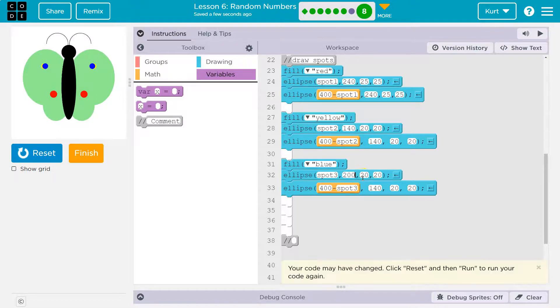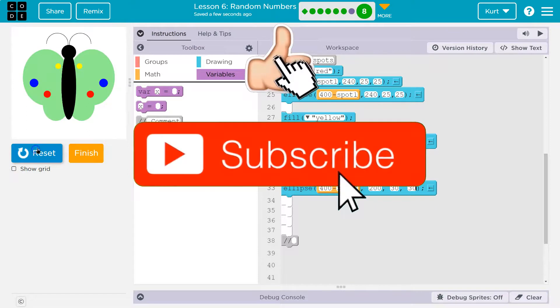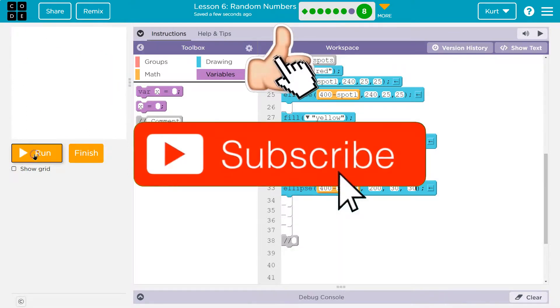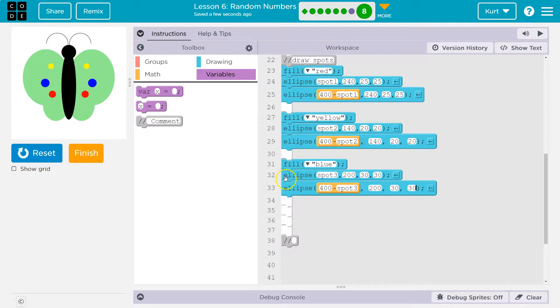So let's give some variability here. So I don't know, 200, 30, 30, 200, 30, 30. Ta-da! Beautiful. Awesome.